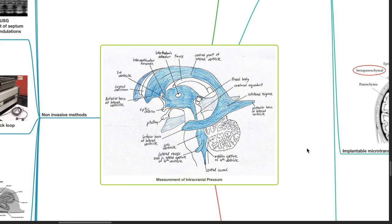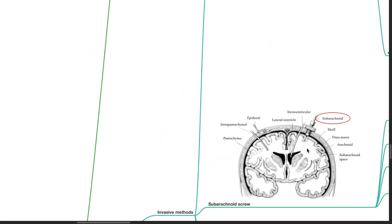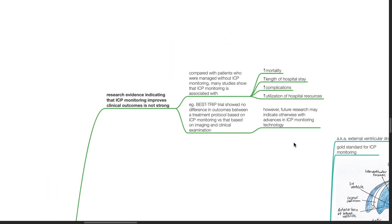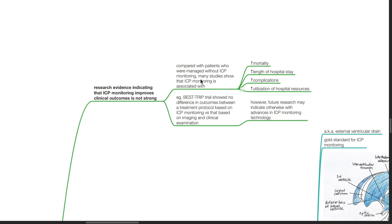Next, we move on to measurement of intracranial pressure. Research evidence indicating that ICP monitoring improves clinical outcomes is not strong. Compared with patients who were managed without ICP monitoring, many studies show that ICP monitoring is associated with increased mortality, increased length of hospital stay, increased complications, and increased utilization of hospital resources. For example, the BEST TRIP trial showed no difference in outcomes between a treatment protocol based on ICP monitoring versus that based on imaging and clinical examination. However, future research may indicate otherwise with advances in ICP monitoring technology.